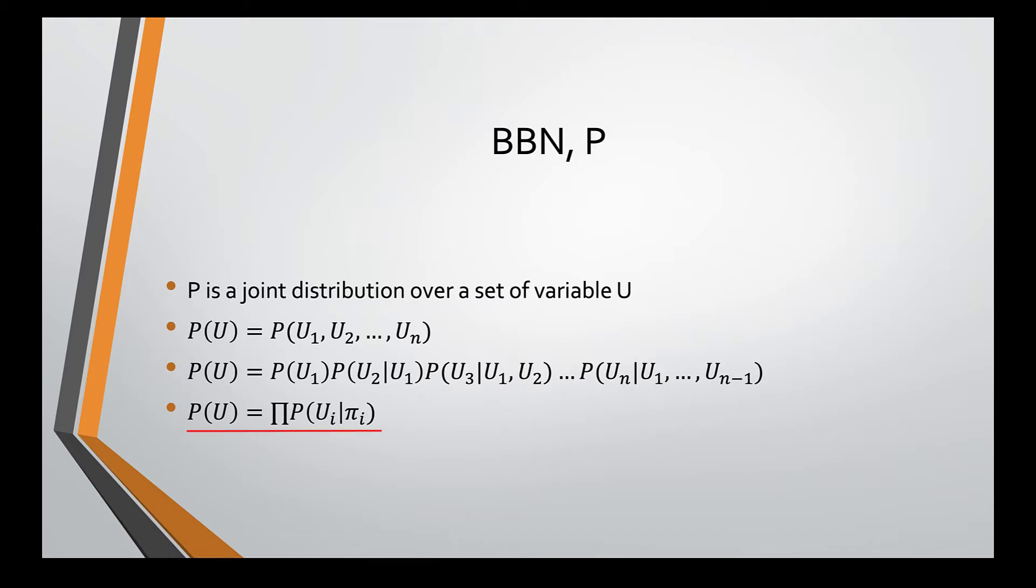Due to the Markov condition, we can further factorize the joint distribution P as the product of each variable's probability given its parents.